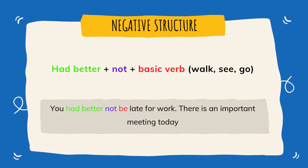Now look at the negative structure for 'had better.' The negative structure is: had better + not + a basic verb. The example says: 'You had better not be late for work. There is an important meeting today.' You can see the structure highlighted: had better + not + be, which is the basic verb.